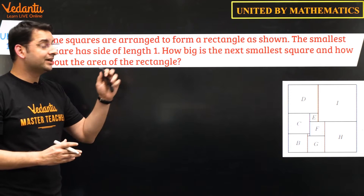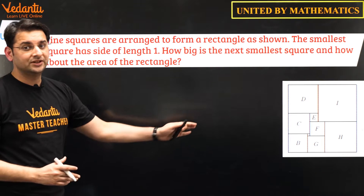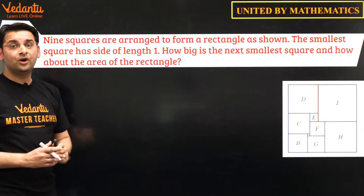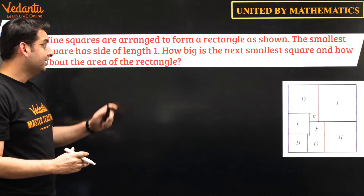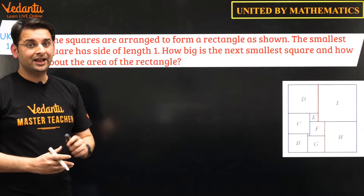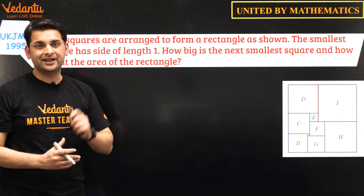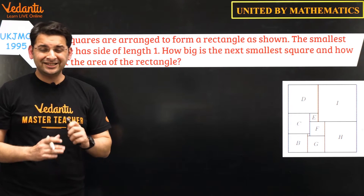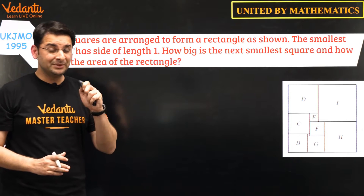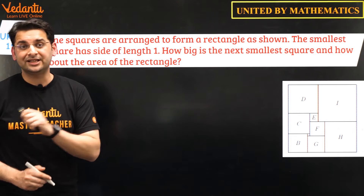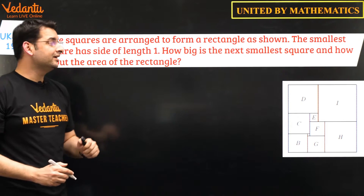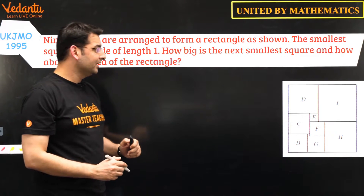Nine squares are arranged to form a rectangle as shown in the figure. The smallest square has a side length of 1 unit. How big is the next smallest square, and what is the area of the rectangle? This is a very easy question, but it may be challenging for students in class 8th and 9th. Let us look at the solution.